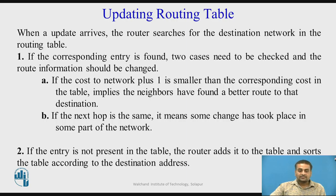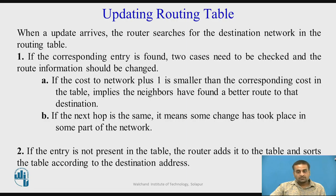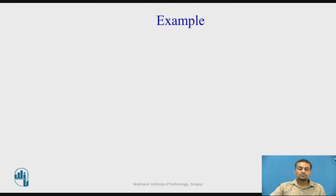The second case is if the next hop is the same as in the previous table, it means some change has taken place in some part of the network. If the destination network received in the advertisement is not present in the routing table, the router adds this entry to its table and sorts the table according to the destination network address.